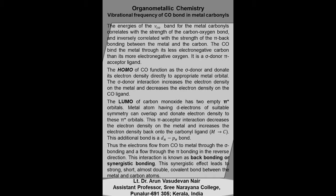In metal carbonyls, electrons flow from carbonyl to metal through sigma bonding, and they flow through pi bonding in the reverse direction. This interaction is known as backbonding or synergistic bonding. This synergistic effect leads to a strong, short, almost double covalent bond between the metal and carbon atoms.